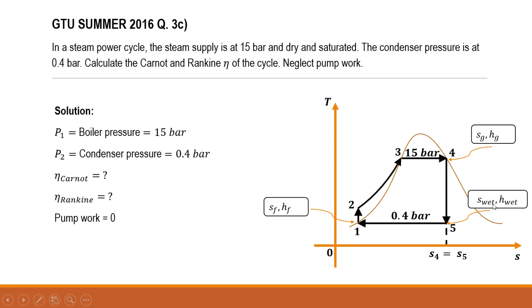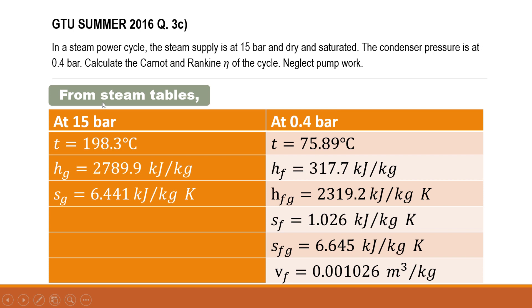Point 0.5 lies in the wet region, so for enthalpy and entropy calculations we use s_wet and h_wet — specific entropy and specific enthalpy of wet steam. Point 0.1 lies on the saturated liquid curve, so we use sf and hf — specific entropy of liquid and specific enthalpy of water. From steam tables at 15 bar, we take saturation temperature, hg, and sg. At 0.4 bar, we take saturation temperature, hf, hfg, sf, sfg, and specific volume of water — all of which the user inputs into the calculator.